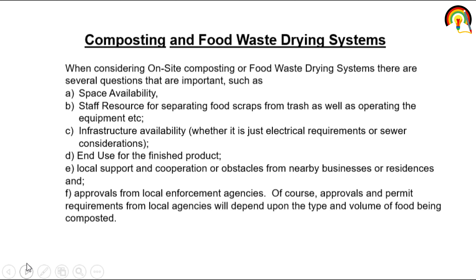Composting and food waste drying systems. When considering onsite composting or food waste drying systems, there are several important questions: space availability — is space available for composting? Staff resources for separating food scraps from trash as well as operating the equipment. Infrastructure availability — electrical requirements or other considerations. End use for the finished product — whether finished products are usable. Local support and cooperation from or obstacles presented by nearby businesses or residences. And approval from local enforcement agencies, which will depend upon the type and volume of food being composted.